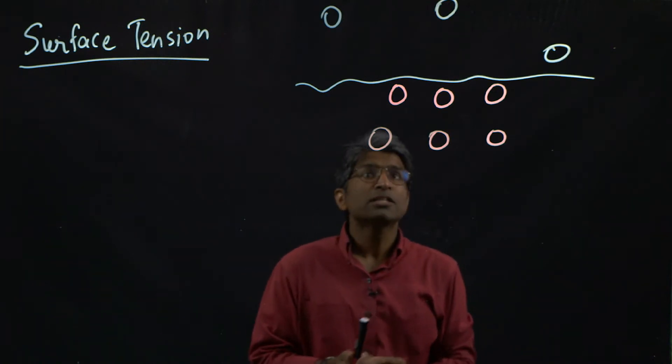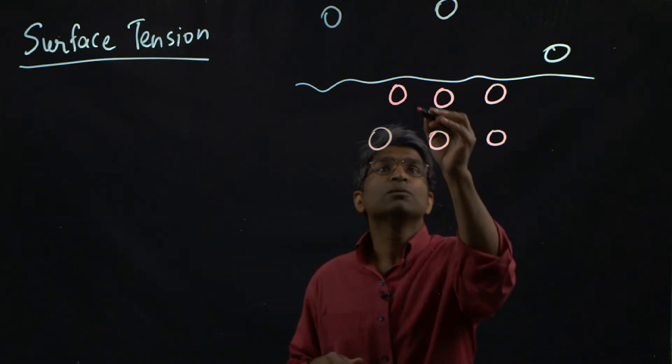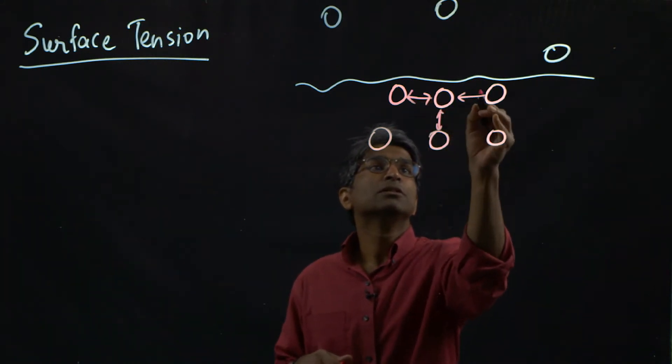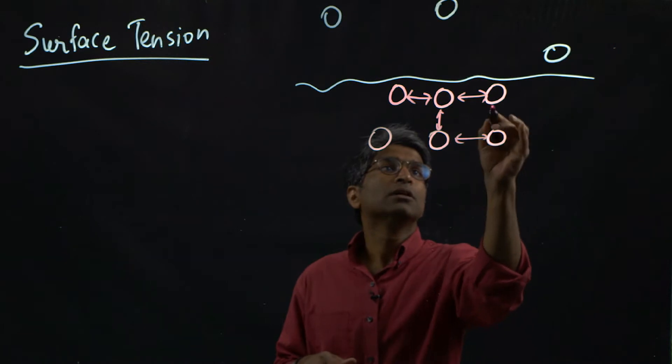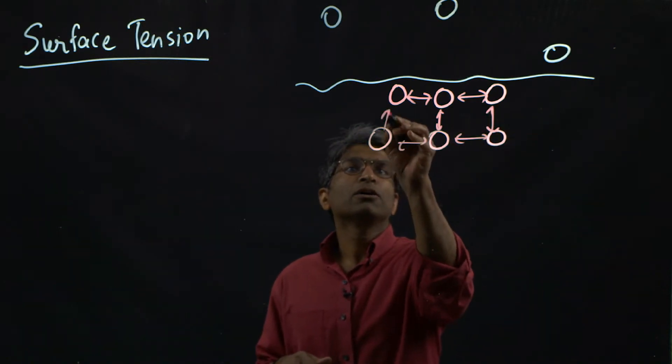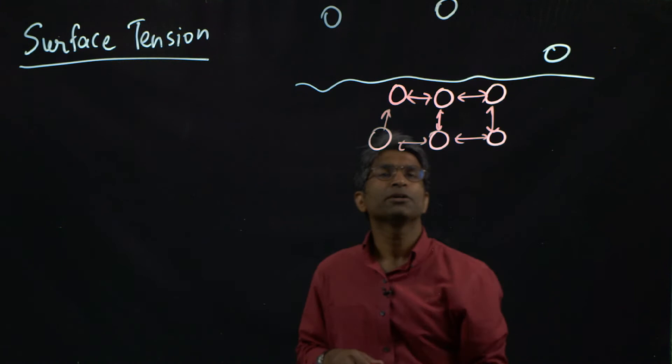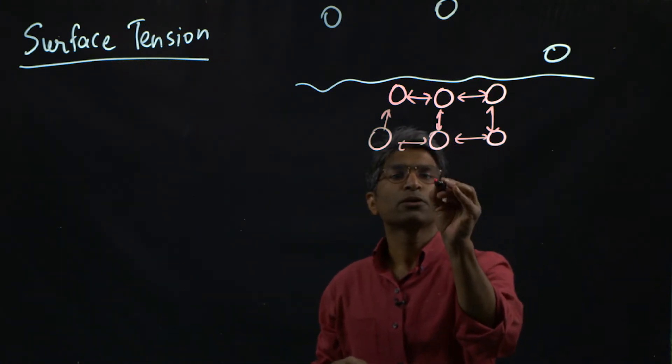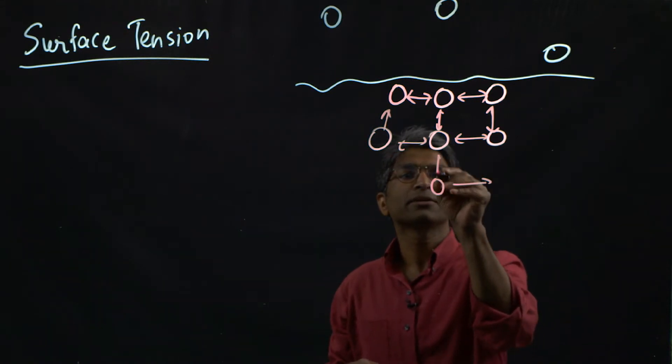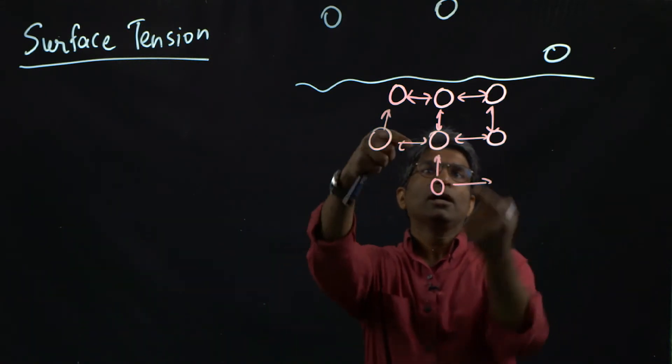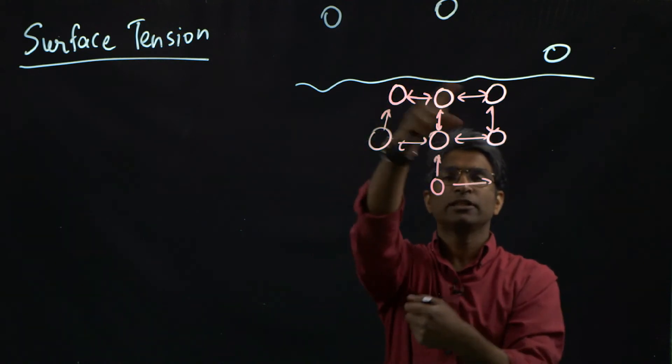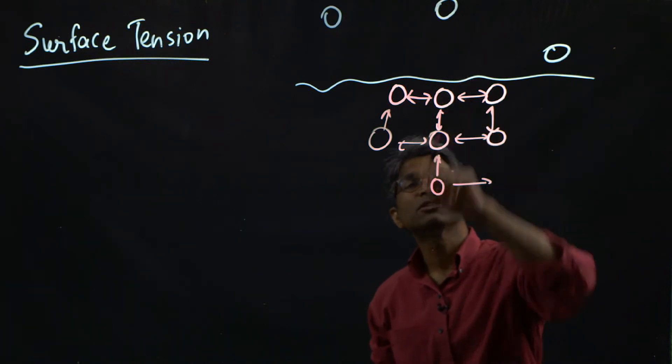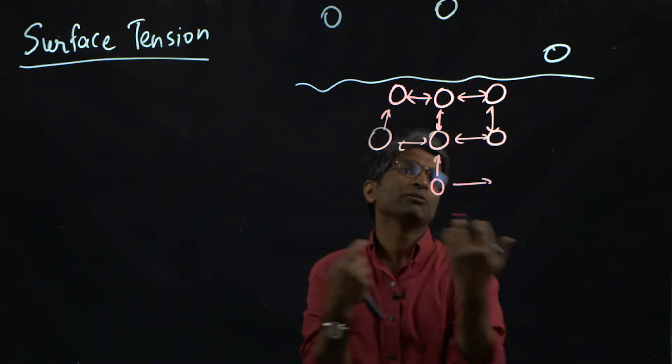And all these molecules always experience attractive forces. And if you took one single molecule here and compare that with the molecule that's somewhere in the interior, so this molecule has balancing interactions in all directions because it's surrounded by liquid molecules on all sides. But the molecule at the surface is not surrounded by molecules everywhere.